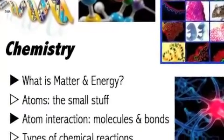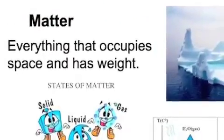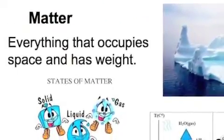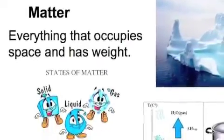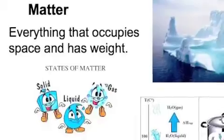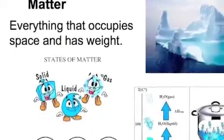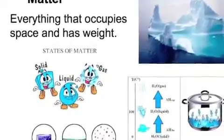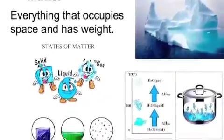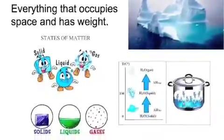Our second lesson gives us an overview of chemistry. What is matter is the first question. Matter is everything that occupies space and has weight. It comes in three different states. We can easily see that in water. Solid is ice, liquid is water, and the gas state is vapor or steam.